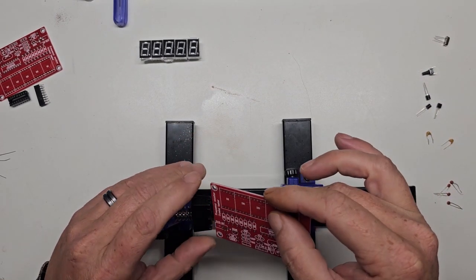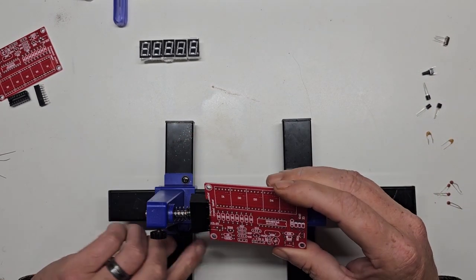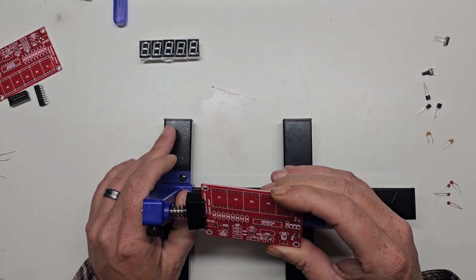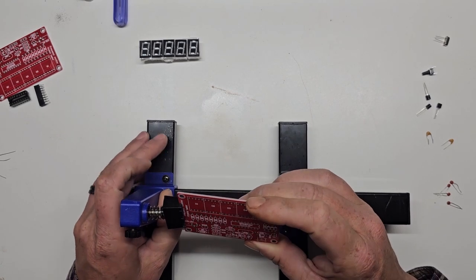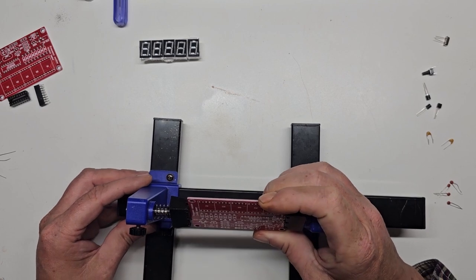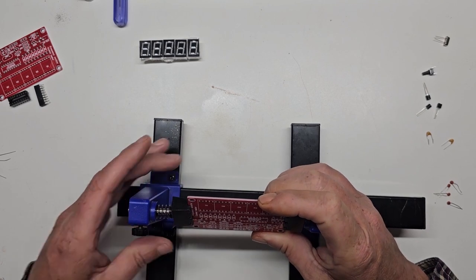A good piece of equipment to have is a PCB vise. It will hold the board in place making it easy to position the PCB for soldering. There are many to choose from. I've been using this one for years and will leave a link to it in the description.